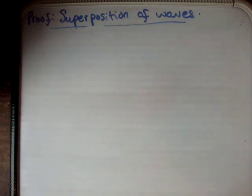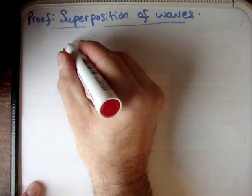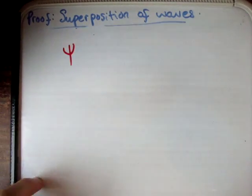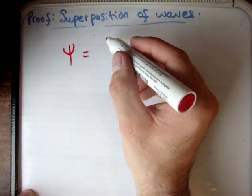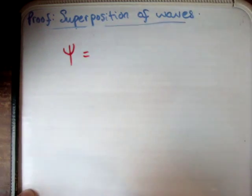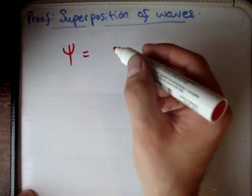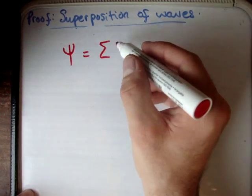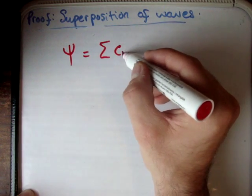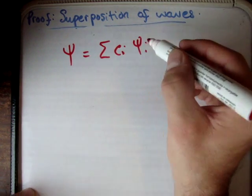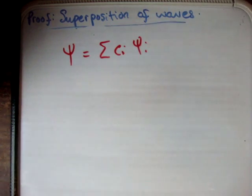Often in physics, we denote waves by the capital letter Psi. When you're adding lots of waves together, the resultant wave is the sum of its component waves — C sub i times Psi sub i — so you're adding all the amplitudes and all the waves together.